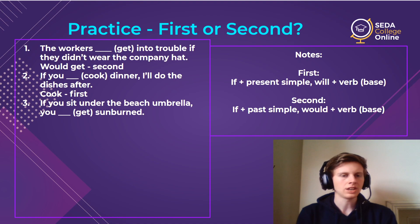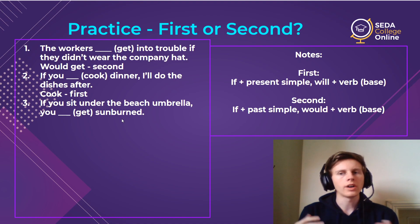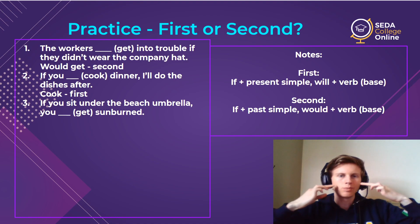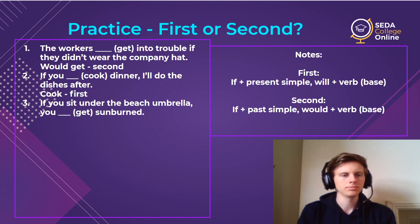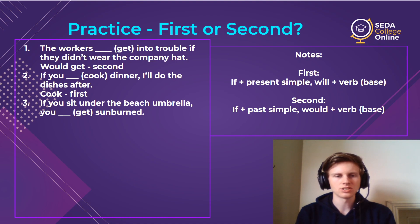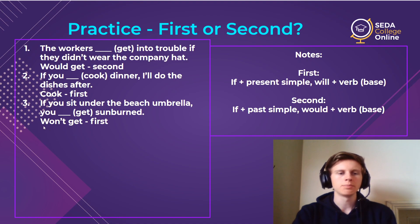Number three: 'If you sit under the beach umbrella, you ___ sunburn.' In case anyone is not totally clear, a sunburn is when you're on the beach, the sun is very bright, and it makes your skin red — it damages your skin because you have too much sun. The answer is 'won't get' — this is a first conditional. We know because 'sit' is present simple. And it's negative: if you sit under the umbrella, you will not get sunburned. So 'won't get.'